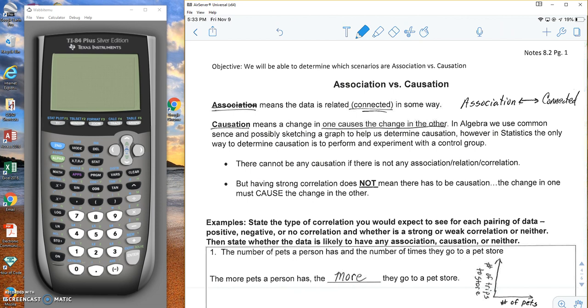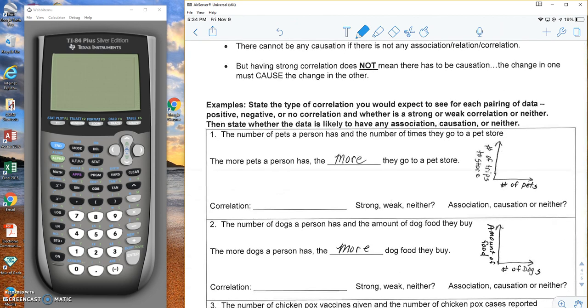Association versus Causation. Association means the data is related or connected in some way, so things are associated together, things are connected. Causation means that one change causes the other to change. In algebra, we use common sense and maybe sketching a graph to help us determine causation. However, in statistics, the only way to determine causation is to perform the experiment with a control group. There cannot be any causation if it's not associated, but having strong correlation doesn't mean there has to be causation. Things can be associated and not caused, but it has to be associated if it is caused. The change in one has to cause the change in the other for it to be causation.